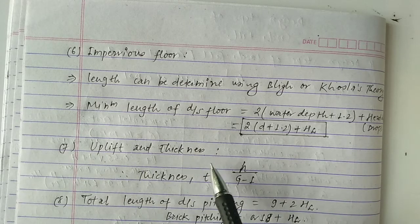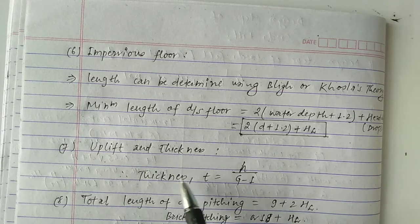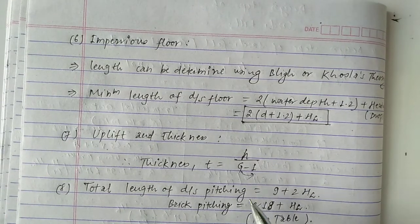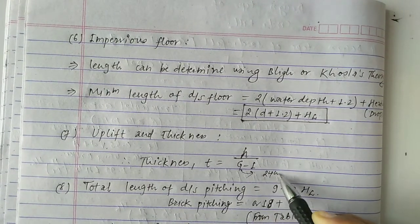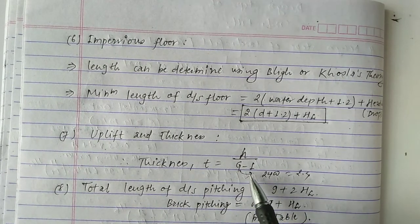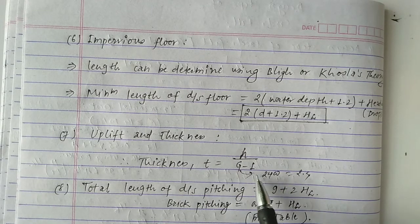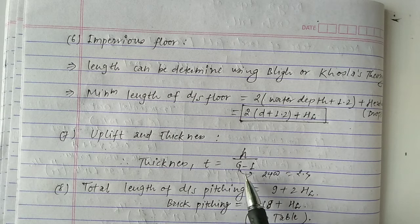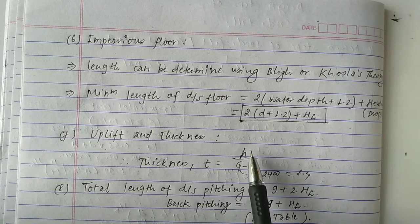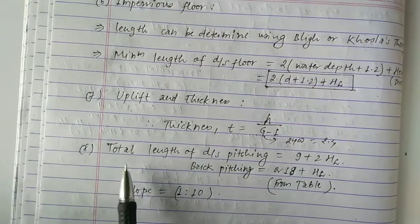Step 7 involves calculating the uplift and thickness. The thickness is given by t = H / (G − 1), where G is the specific gravity of concrete, taken as 2.4 for plain concrete. We will see in the numerical how to calculate the value of H and then determine the thickness.